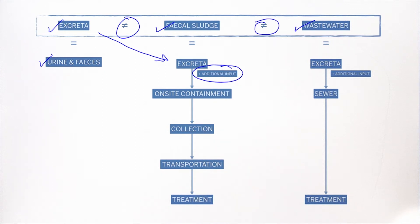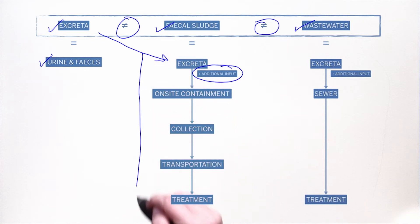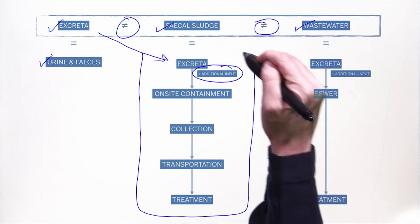And anything else really means anything else — from flush water, cleansing materials, menstrual hygiene products, bathing or kitchen water, garbage, or municipal solid waste. This, then, is the fecal sludge management service chain.